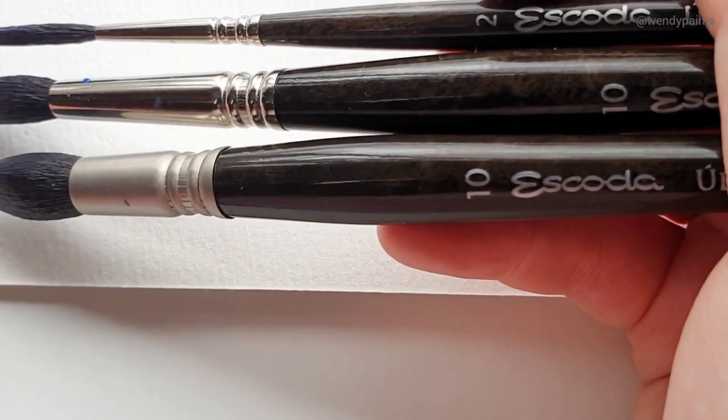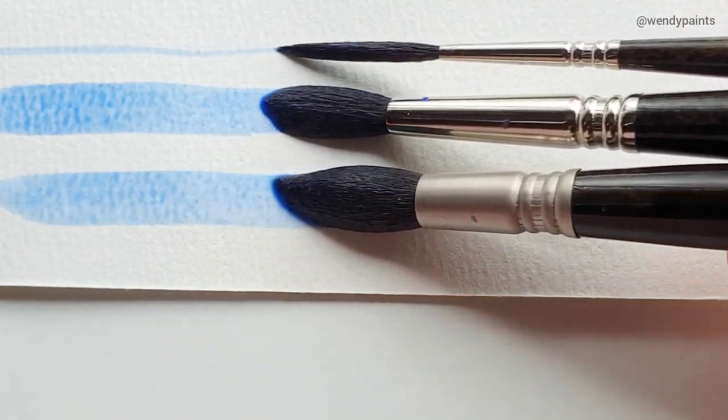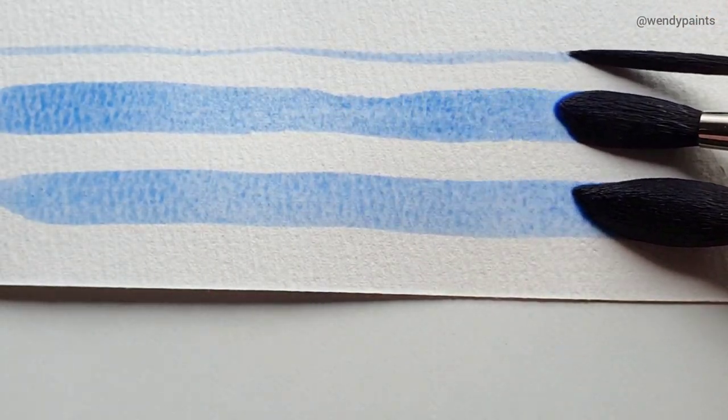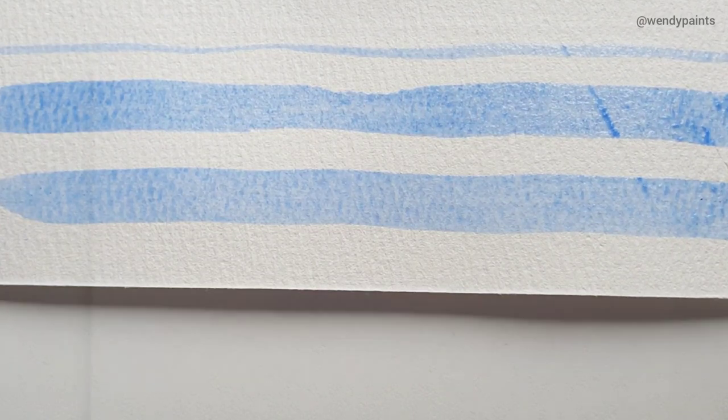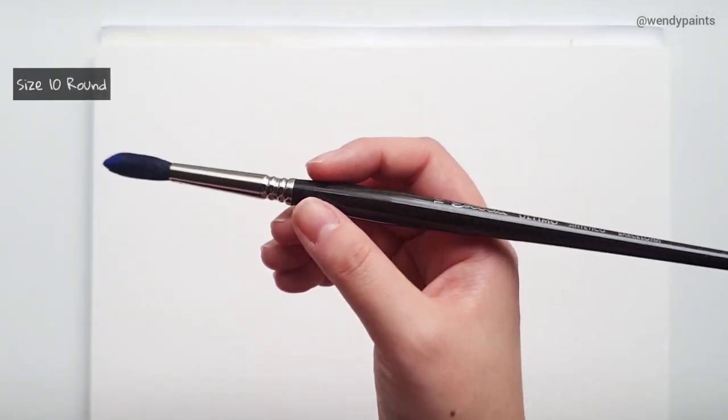To do this, I'm going to be painting a continuous line with these brushes without reloading until the paint runs out. Once I reach the end of the page, I'm going to continue the line straight underneath and repeat this until I run out of paint.